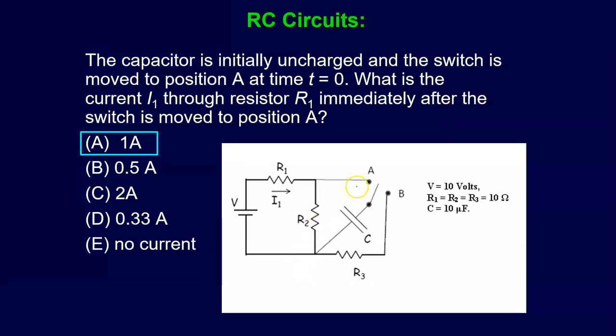And the way I think about this, first of all, this kind of switch is kind of confusing. But basically, this switch allows you either to connect at point A and have the circuit that way or connect through point B. And so at point A it involves the battery, and point B is just the capacitor and the resistor by itself.